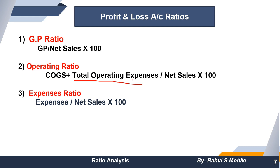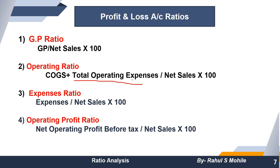Next is the expenses ratio: each individual expense divided by net sales multiplied by 100. For example, office and administration divided by net sales × 100; selling and distribution divided by net sales × 100. This way you can calculate the ratio of every expense and identify what percentage each expense is relative to net sales. Next is operating profit ratio: net operating profit before tax divided by net sales × 100.